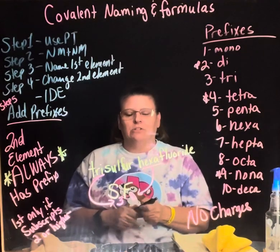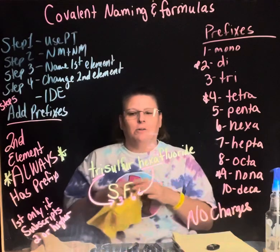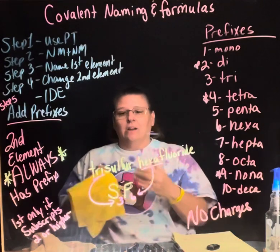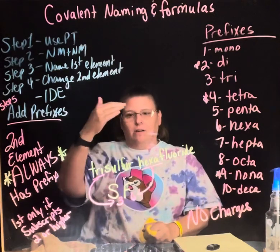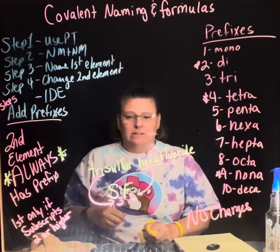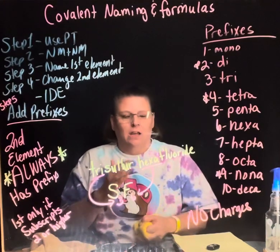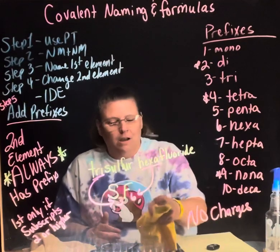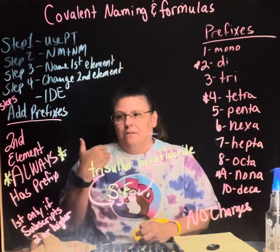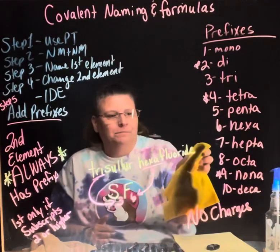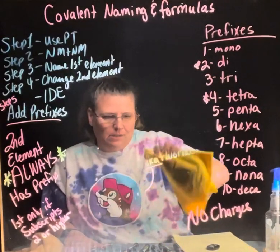This is going to cause a problem when you go back and forth between ionic and covalent, so you need to know the difference. Ionic formulas have cations and anions. Covalent formulas have non-metal and non-metal.